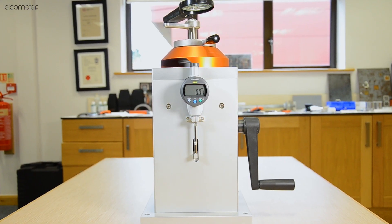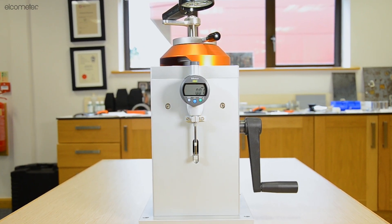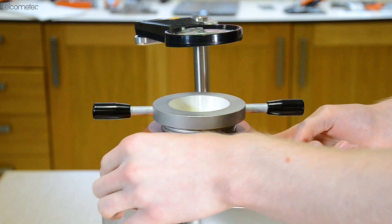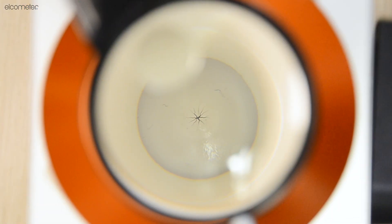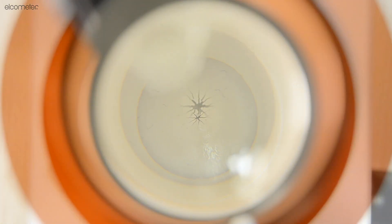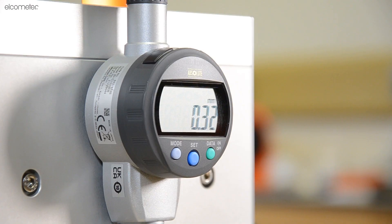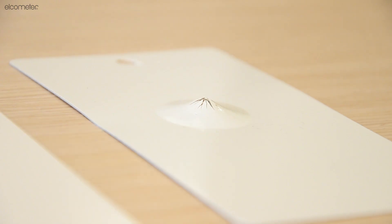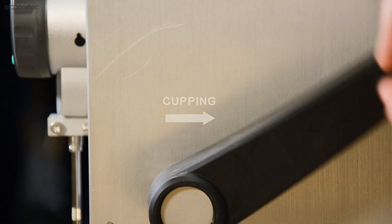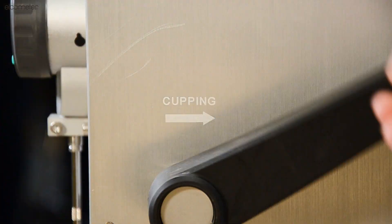This can be simulated using a cupping tester where the coated test panel is clamped into place and the ball of known diameter is gradually pushed through. This allows you to observe the exact points at which the damage occurs as displayed by the gauge. Cupping tests can determine the extent a coating can be drawn out or deformed before it fractures by gradually increasing the depth of the indentation.